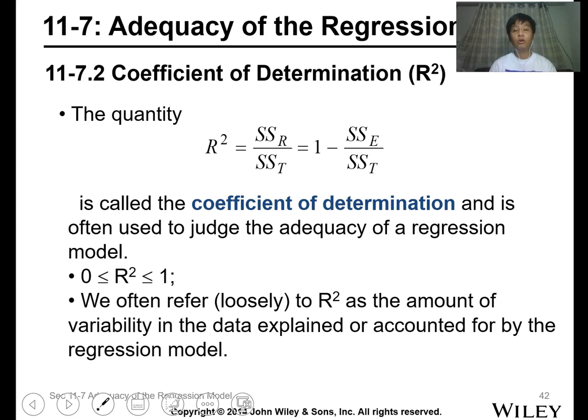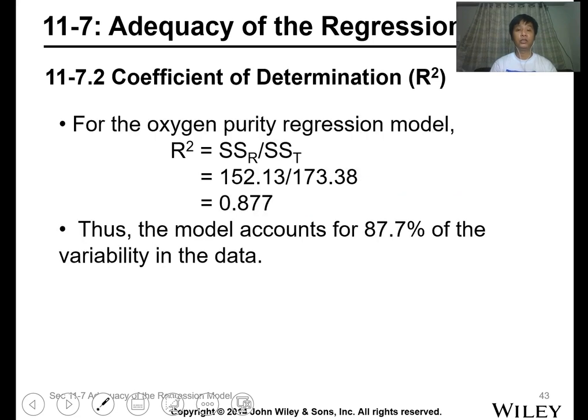The value for R squared is ranging from 0 to 1, and we often refer loosely to R squared as the amount of variability in the data explained or accounted for by the regression model. For the oxygen purity example, we know the SSR and the SST, so you just get their ratio and we'll have the value 0.877.